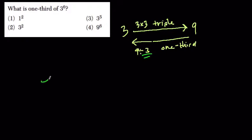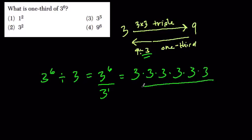So if we have 3 to the sixth, and you want to find a third of it, you divide by 3, which would equal 3 to the sixth over 3 to the first, which equals, well, 3 times 3 times 3, 6 times. And over 1, 3, well, you can pair up these...